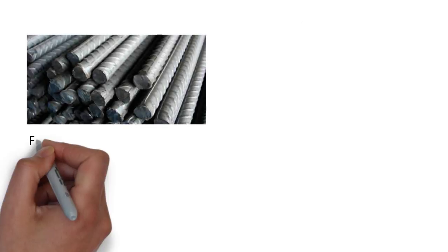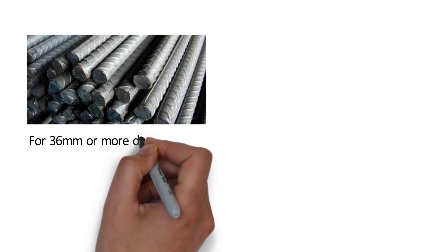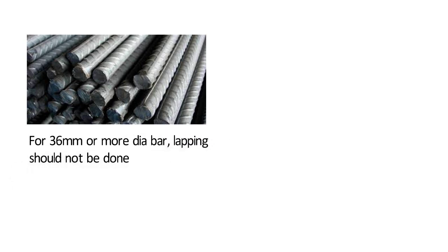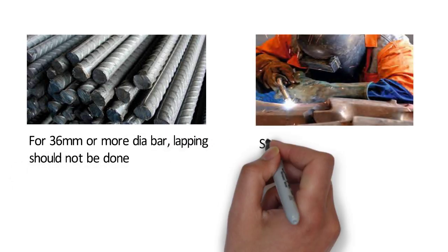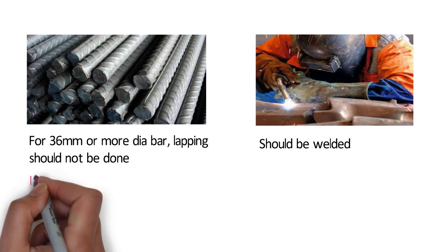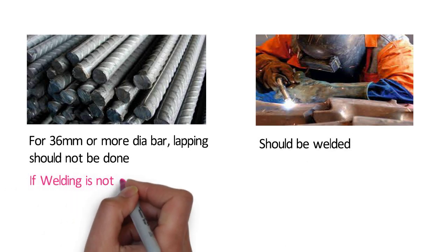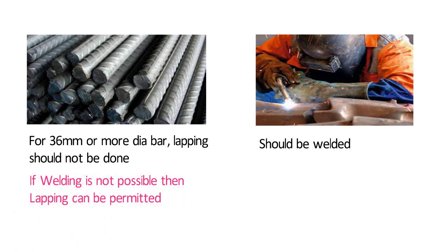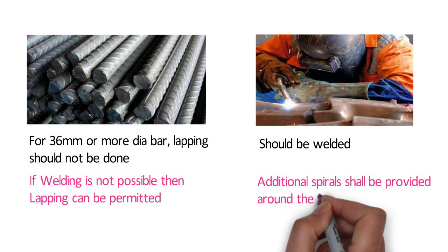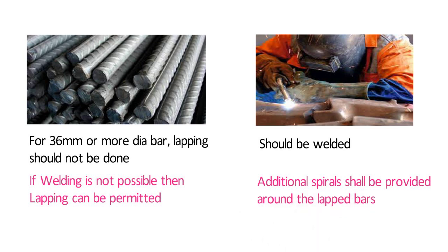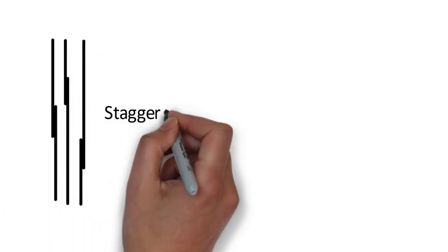If the diameter of the bar is more than 36 mm, then lapping should not be done. Instead of lapping, these bars should be welded. But if welding is not possible, then lapping can be permitted for bars larger than 36 mm, but in this case additional spirals shall be provided around the lapped bars.